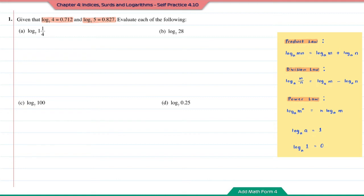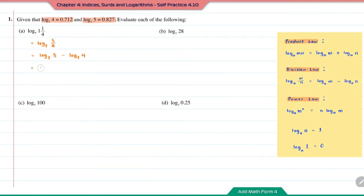Question A: log base 7 of 1 and 1 over 4. First, I'm going to change this mixed number into an improper fraction — it's going to be 5 over 4. Now use the division law. We can write this as log base 7 of 5 minus log base 7 of 4, which is 0.827 minus 0.712. The answer is 0.115.